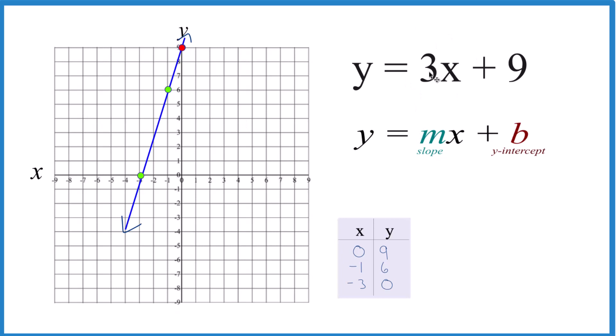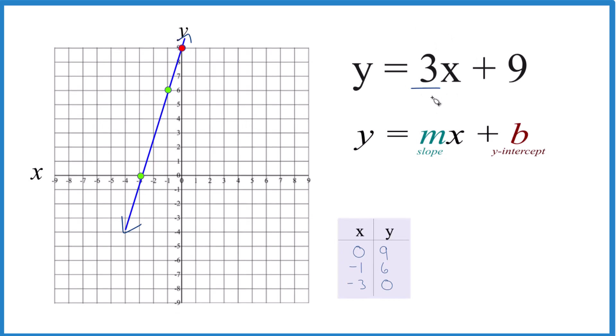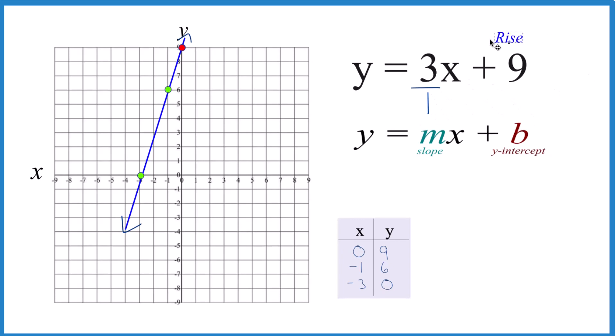How about the slope, 3? Let's call that 3 over 1. It's still 3. 3 divided by 1 is 3. But now we can call it rise over run. And if we go up, we come over here and go up, we're going to have a bit of a problem.